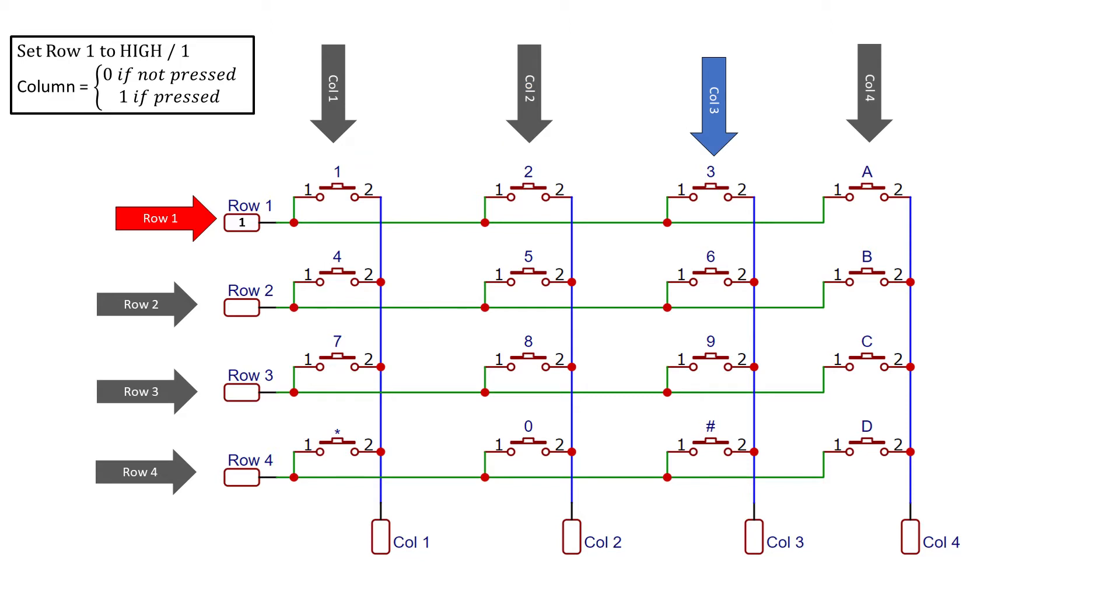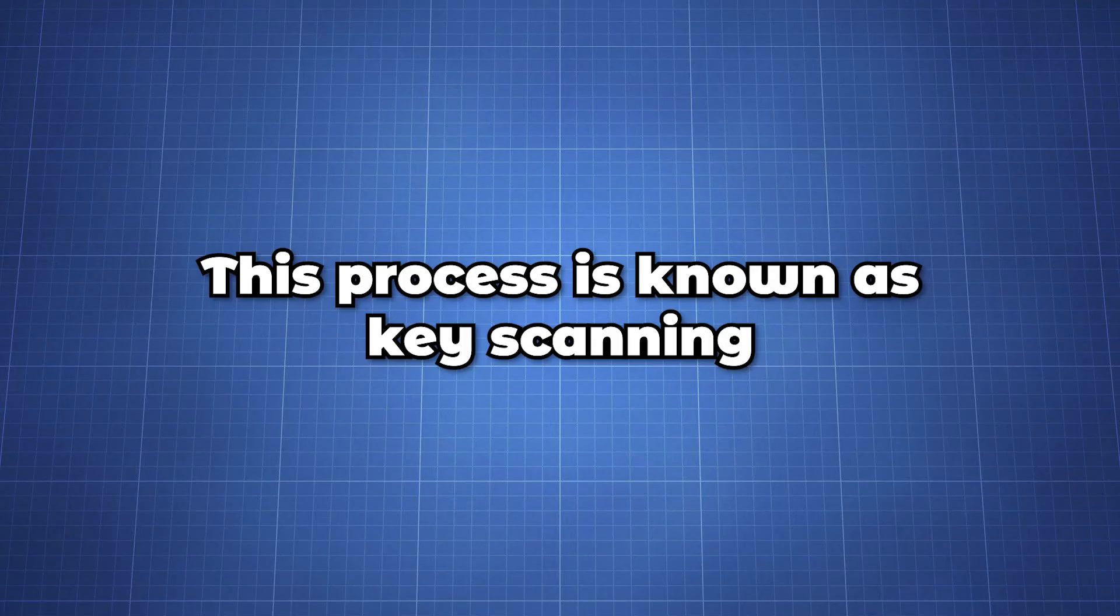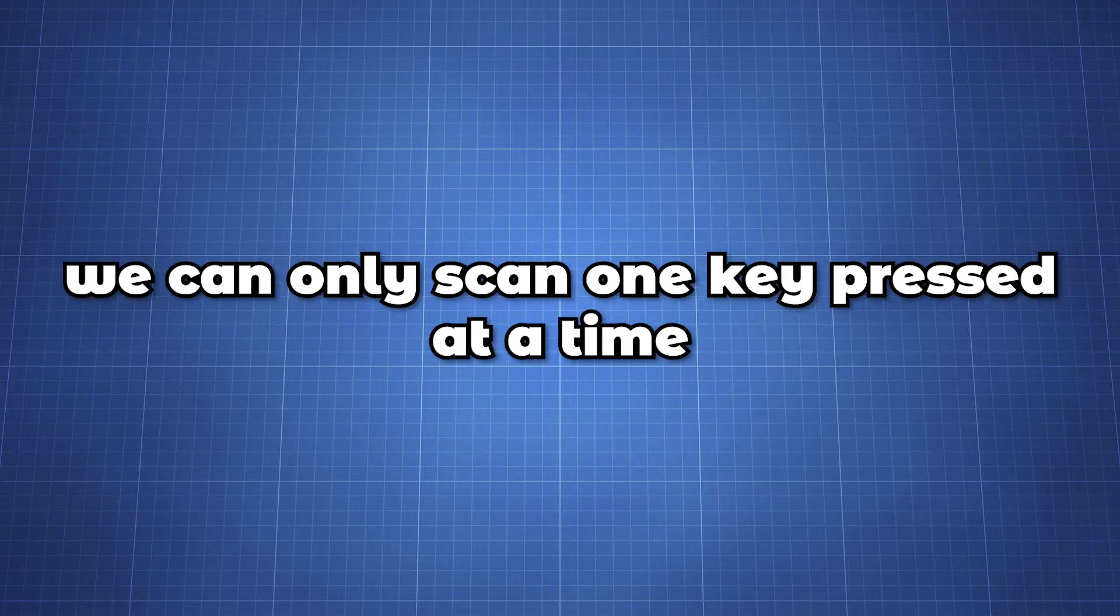We start with the first row and set it to high and we will check the column lines one at a time to see if a button has been pressed. If the column connection stays low the button on the row has not been pressed. If it goes high, for example when we press 6, the Pico will know which row is currently set high and which column received a high input due to the short. This process is known as key scanning. Since we constantly scan each row with all the columns we can only detect one key press at a time.